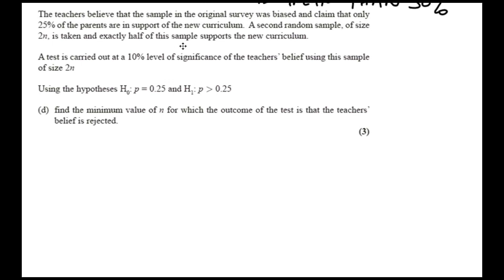It's quite a lot to break down here. Let's look for some clues in the question. So the teachers are now claiming that only 25% of the parents are in support. There's going to be a new random sample. This time the size is 2n. And this phrase here, exactly half of this sample supports the new curriculum. We also have the significance level 10%, and we've already been given our hypotheses, which also lets me know I'm doing a one-tailed test. So let's get going.